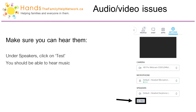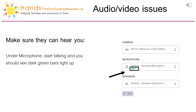Make sure you can hear them. Under Speakers, click on Test — you should be able to hear music. Make sure they can hear you. Under Microphone, start talking and you should see the dark green bars light up.